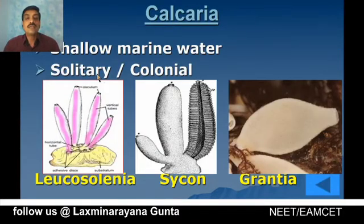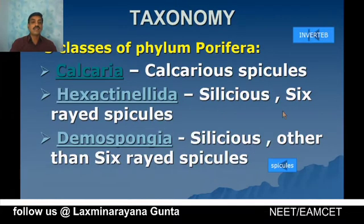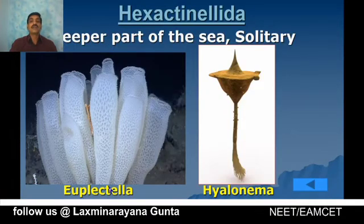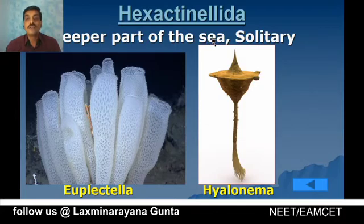Class Calcarea: sponges live in shallow marine waters and may lead solitary or colonial mode of life. Examples include Leucosolenia, Sycon, and Grantia. Class Hexactinellida — 'hexa' means six — includes Euplectella, also called the Venus flower basket, and Hyalonema, called the glass rope sponge. They live in the deeper part of the sea and are mostly solitary.